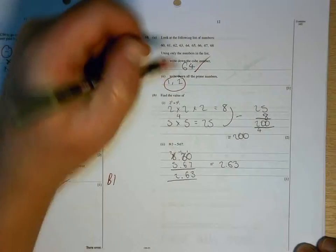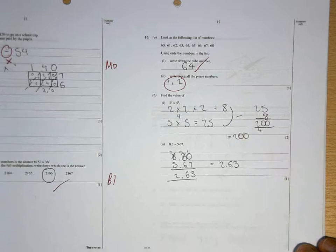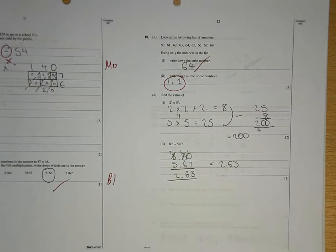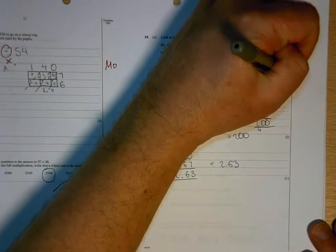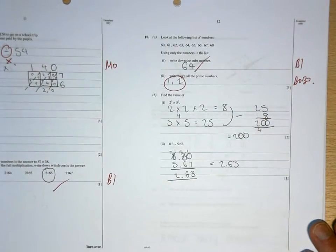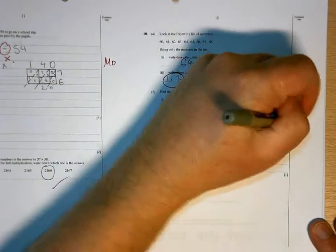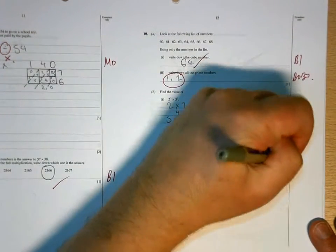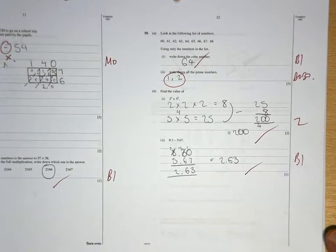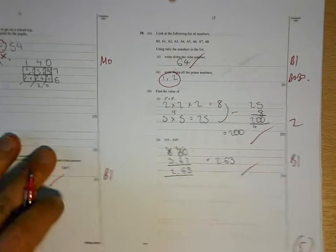That's correct. These need to be prime numbers from the list that you're given. 200 is correct, well done. And 2.63 is correct, good. 2, 4, 5 for the page.